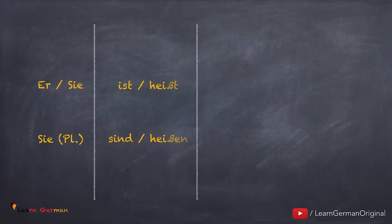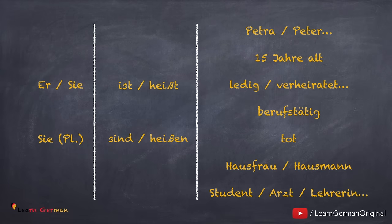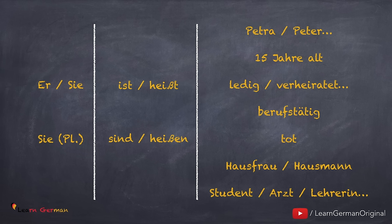You can further give details about your family members. You can choose any structure that matches. For example, if you're talking about your brother you would say: er ist fünfzehn Jahre alt. Or if you're talking about your mother you can say: sie heißt Petra. Or if you're talking about your wife you can say: sie ist Lehrerin. You can also talk about two or more people, for example your parents: sie sind berufstätig. So you can make sentences as per your family members.